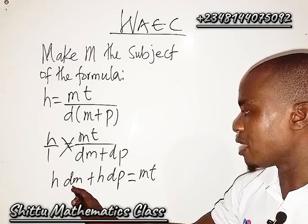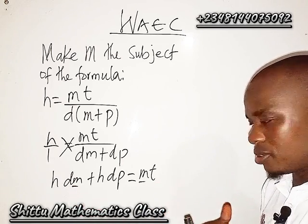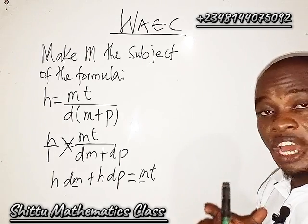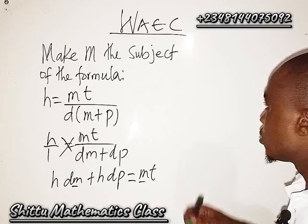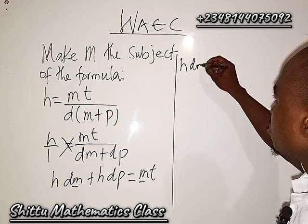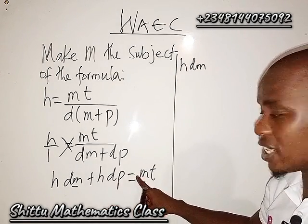From there, we can see that we have m here and we have m here, so I would like us to bring them together so that we'll be able to have m on one side. Now from there, you can see that h·dm, if mt should go to the other side it will change to negative, we are going to have minus mt.